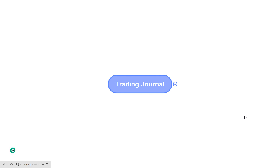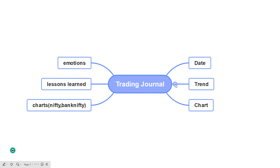My trading journal has fields like date, trend, chart — the chart of the particular trade I have taken — along with the charts of Nifty and Bank Nifty. I also include the lessons I have learned on that day, the mistakes I made, and the solutions. Everything comes under the lessons learned section.